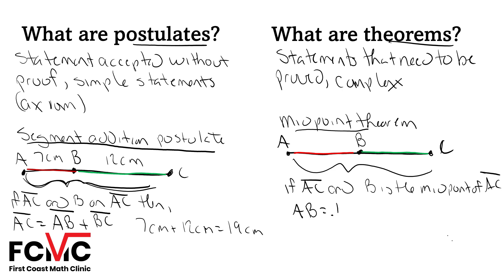AB is going to be equal to one-half the measure of AC, and BC is going to be equal to one-half the measure of AC. So it relates our smaller segments, AB and BC, to our larger segment, AC.